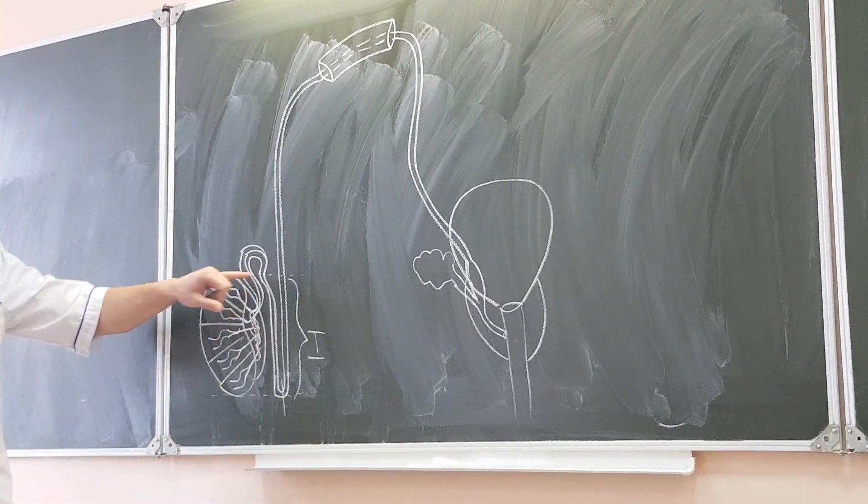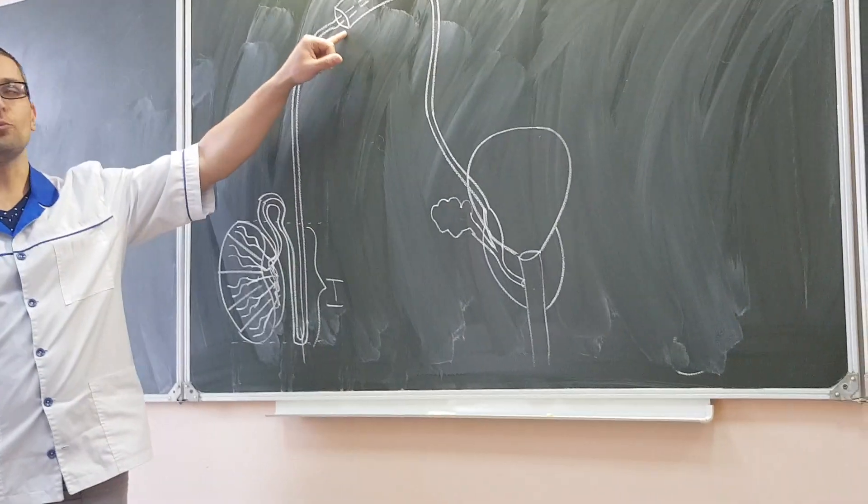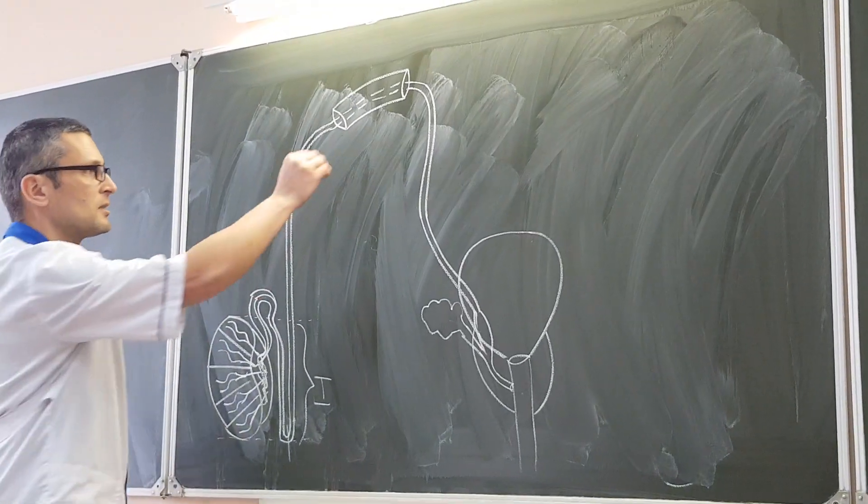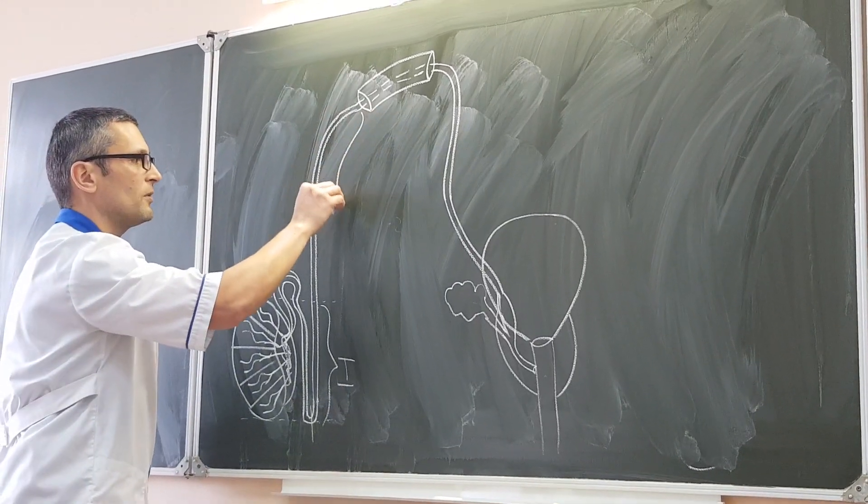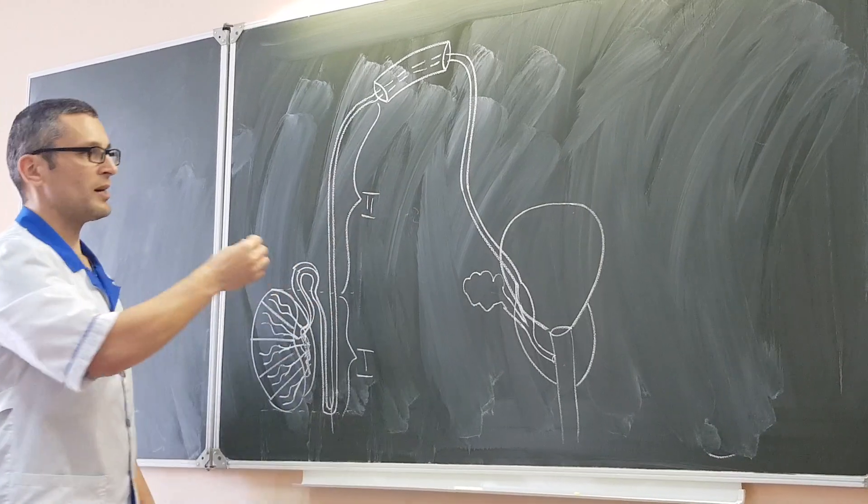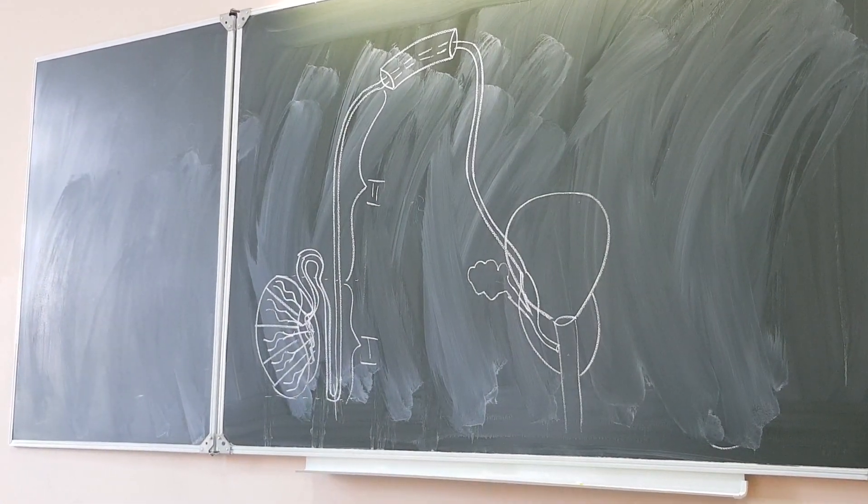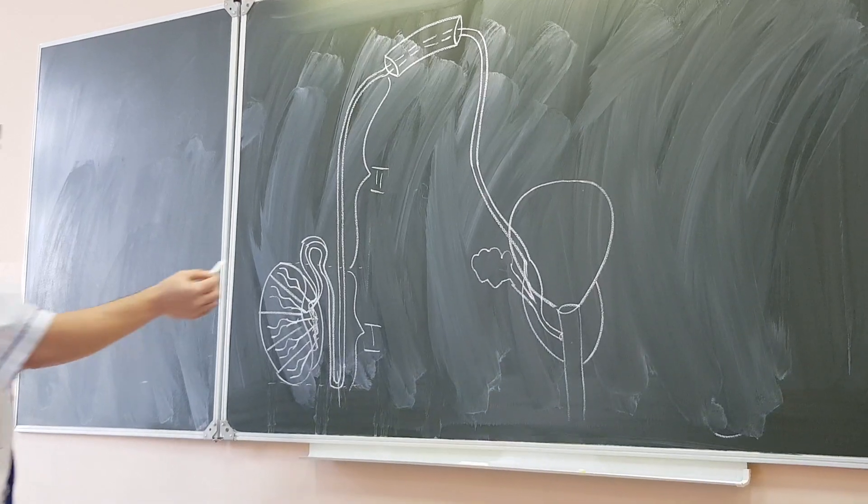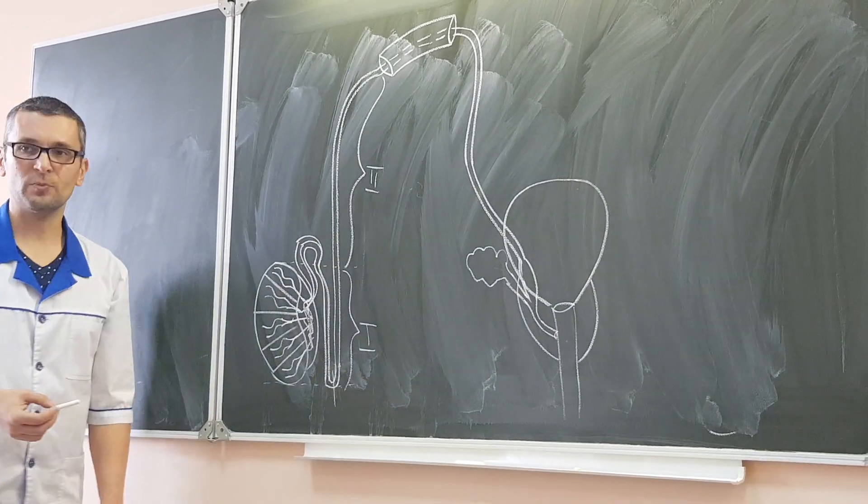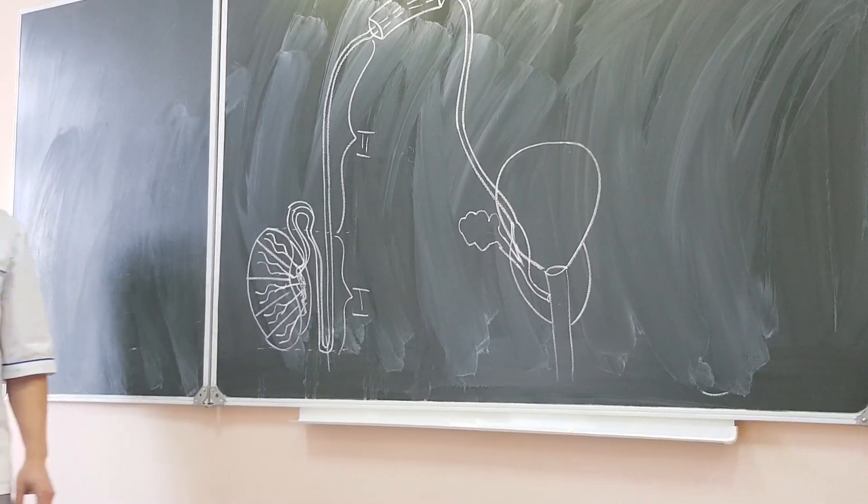Then, next part goes from upper edge, from upper end of the testis, to the superficial inguinal ring. And this part of ductus deferens is second. And it passes like component-like structure of spermatic cord. That's why this part is called pars funicularis, because spermatic cord in Latin is called funiculus spermaticus.